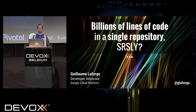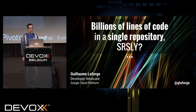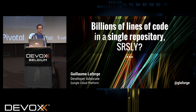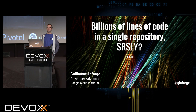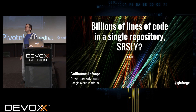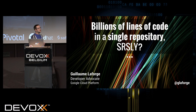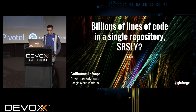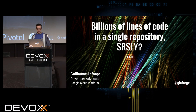So today we'll be speaking about how Google handles billions of lines of code in a single repository. That might seem a little bit scary, so there are some downsides as well, but there are some advantages to this. And we'll have a look at both aspects.